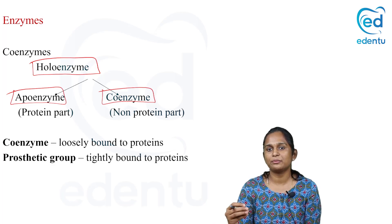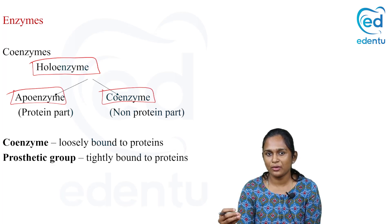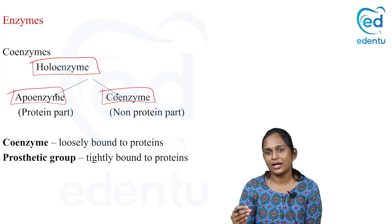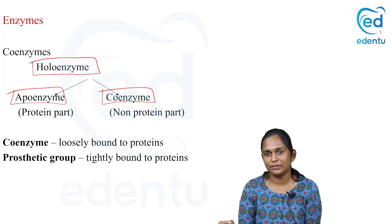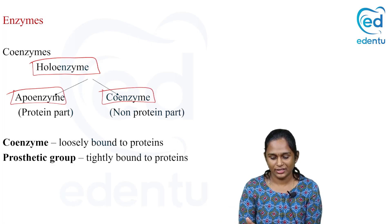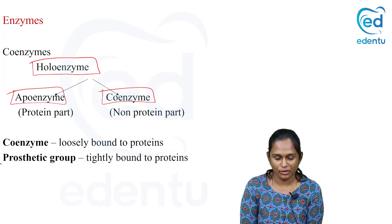If the non-protein part is loosely bound, then that is called coenzyme. If the non-protein part is very tightly bound to the apoenzyme, then that is called prosthetic group.